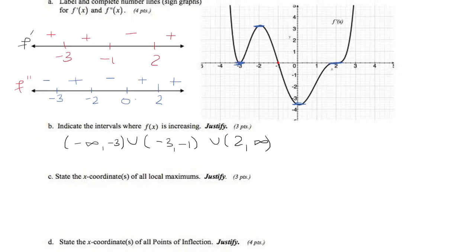So the local max will occur when it changes from increasing to decreasing. So that only occurs at x equals negative 1.